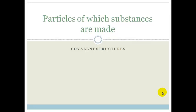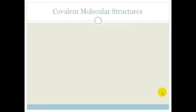In today's lesson, we're going to look at covalent structures. So first, let's look at covalent molecular structures. Obviously, they are made up of molecules. They consist of separate molecules.